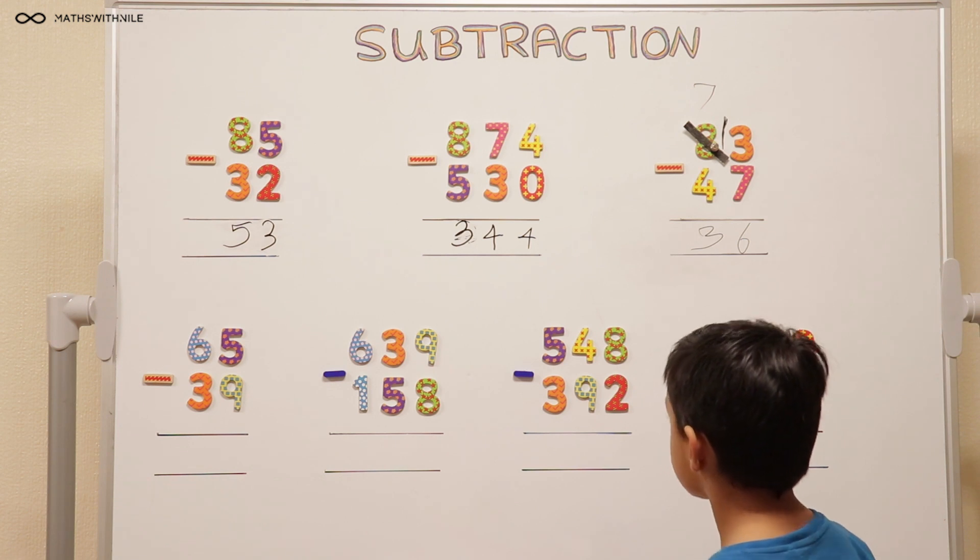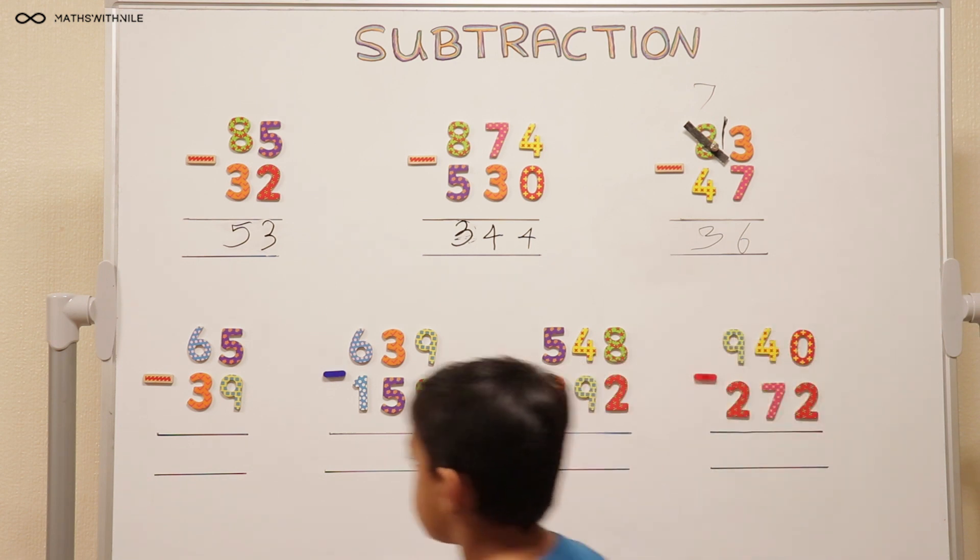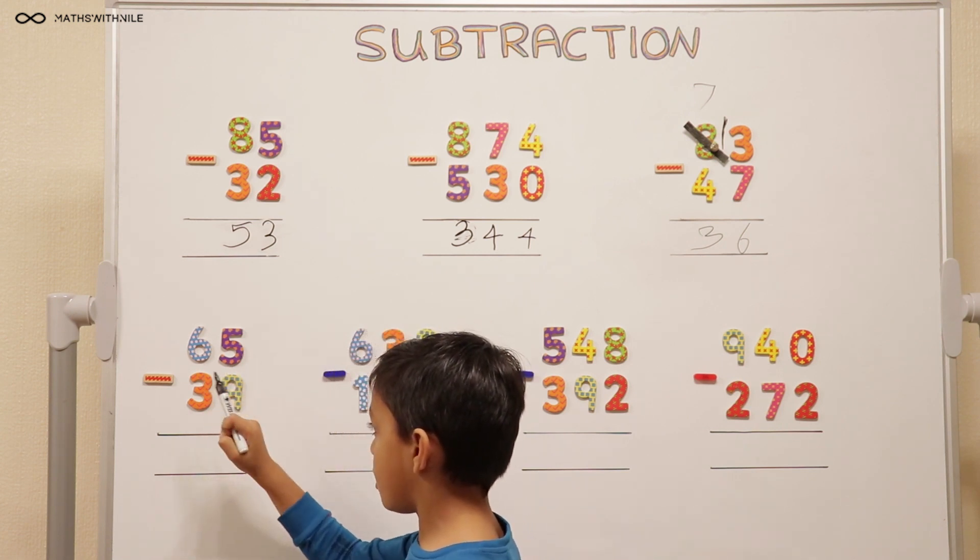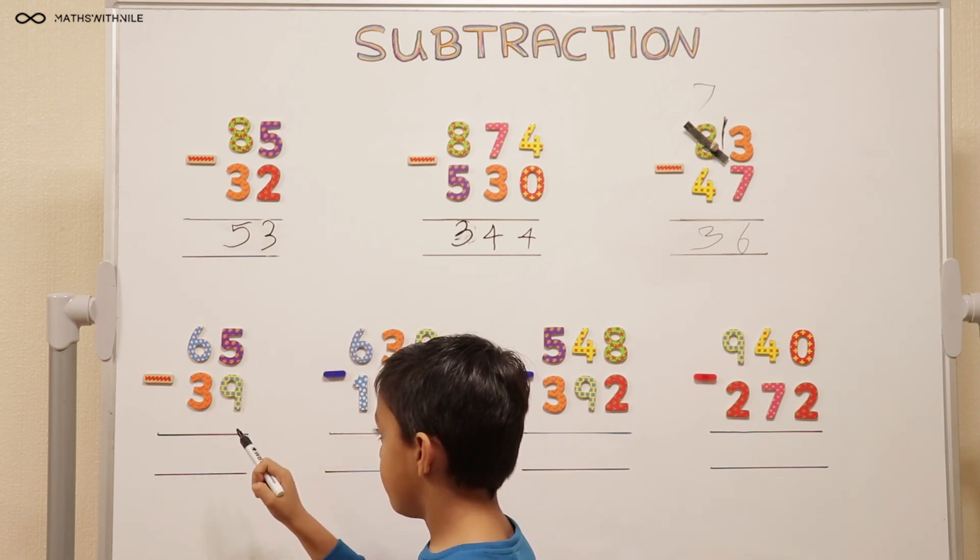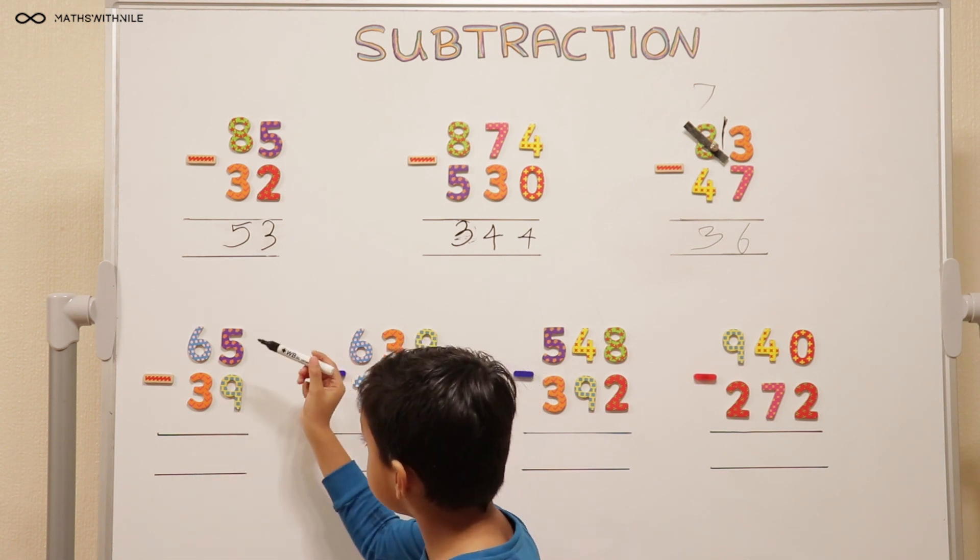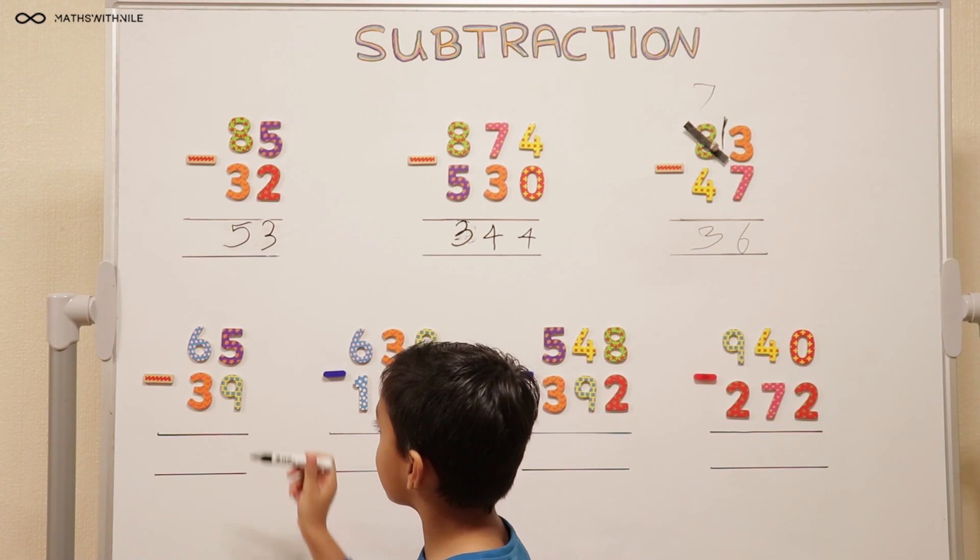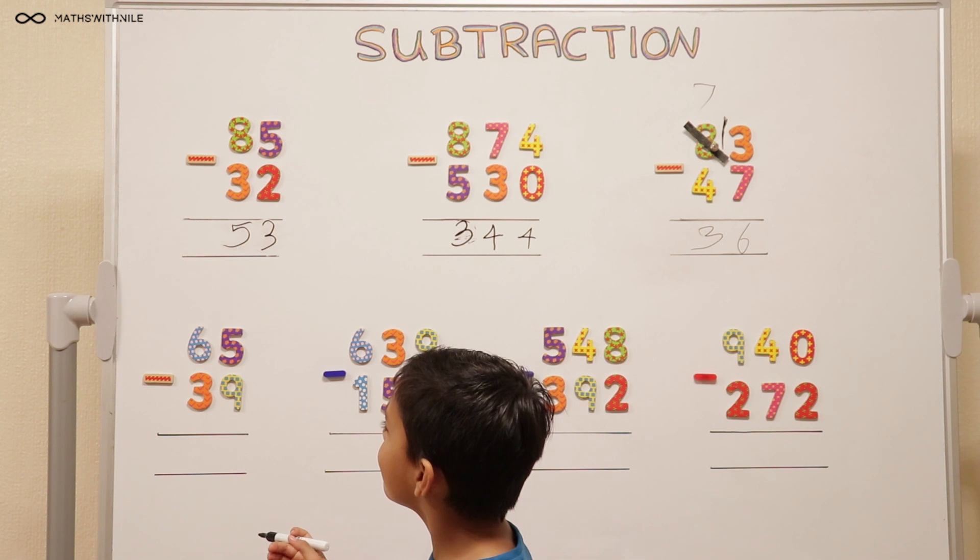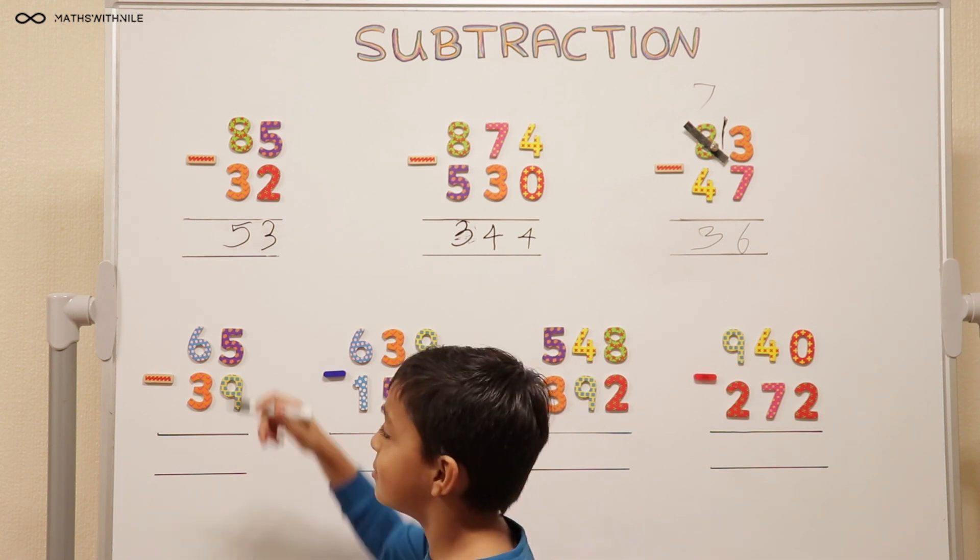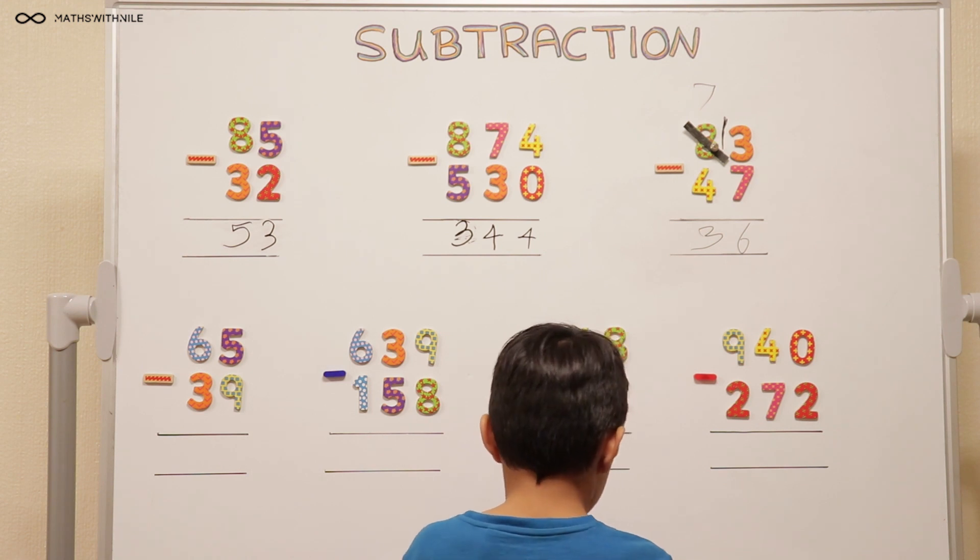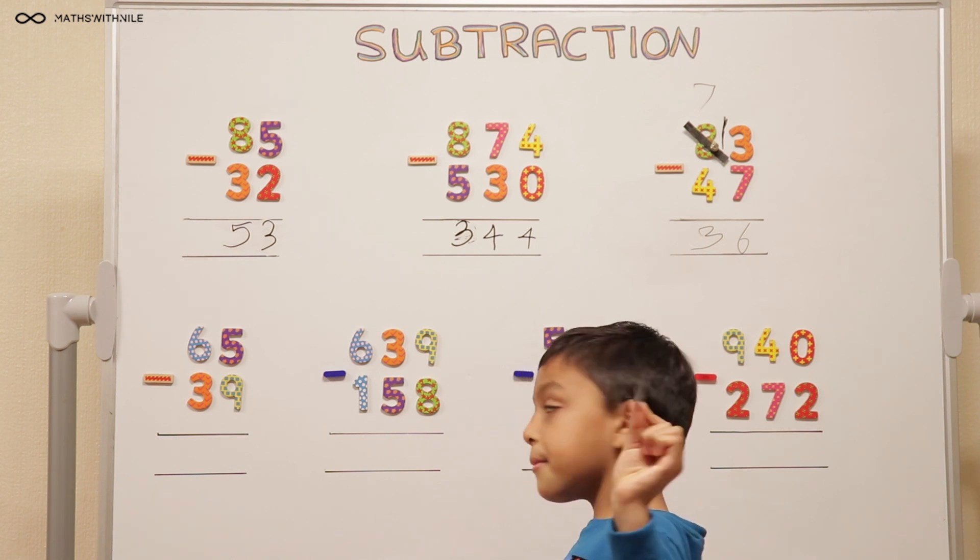The next question is quite similar. Let's do the next one. What does it say? Make sure you stand to the side so we can read it. 65 take away 39. So we start with the units. 5 take away 9. Can that work? No.